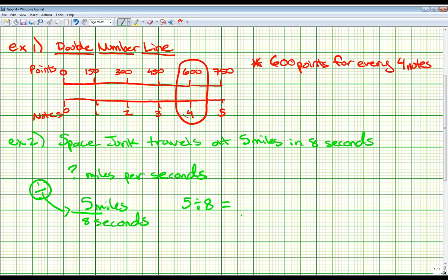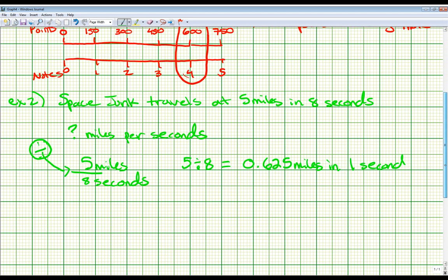So if I do five divided by eight on my calculator, I end up getting 0.625. So that means that this piece of space junk travels 0.625 miles in one second. We divided our rate to get a unit rate. And this is a unit rate because there's a one sitting here. One of your values has to be a one. And we're done with that one.